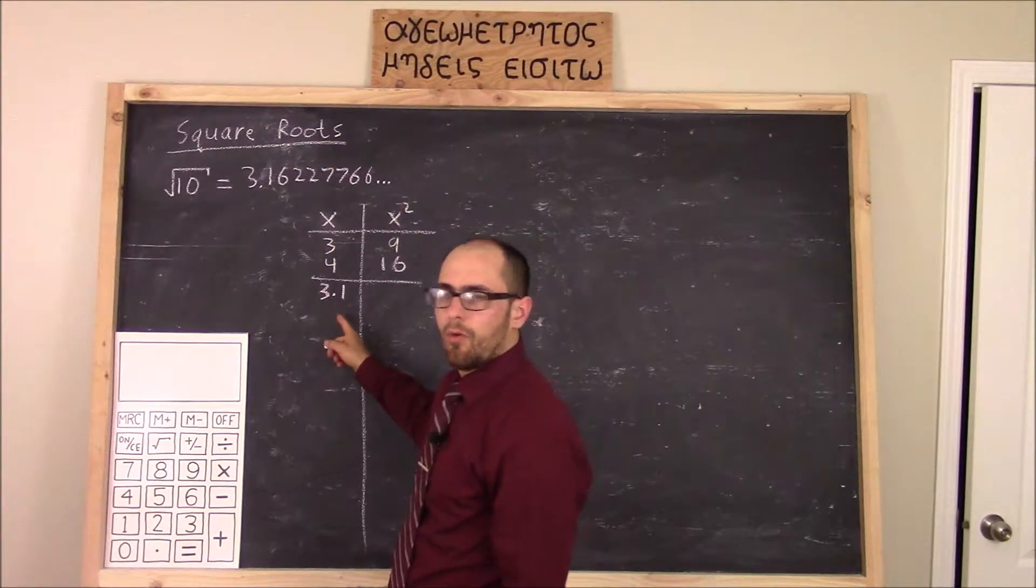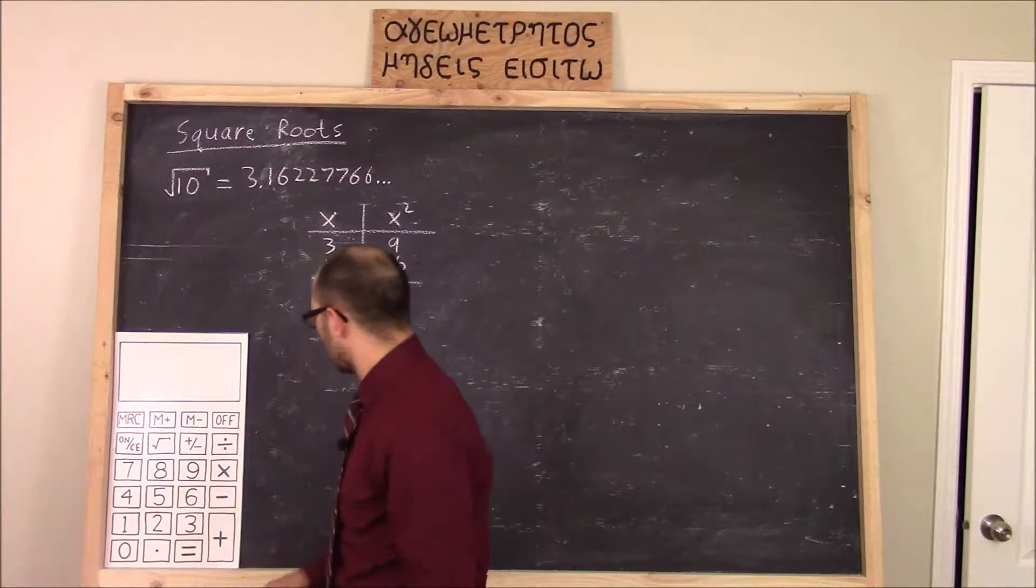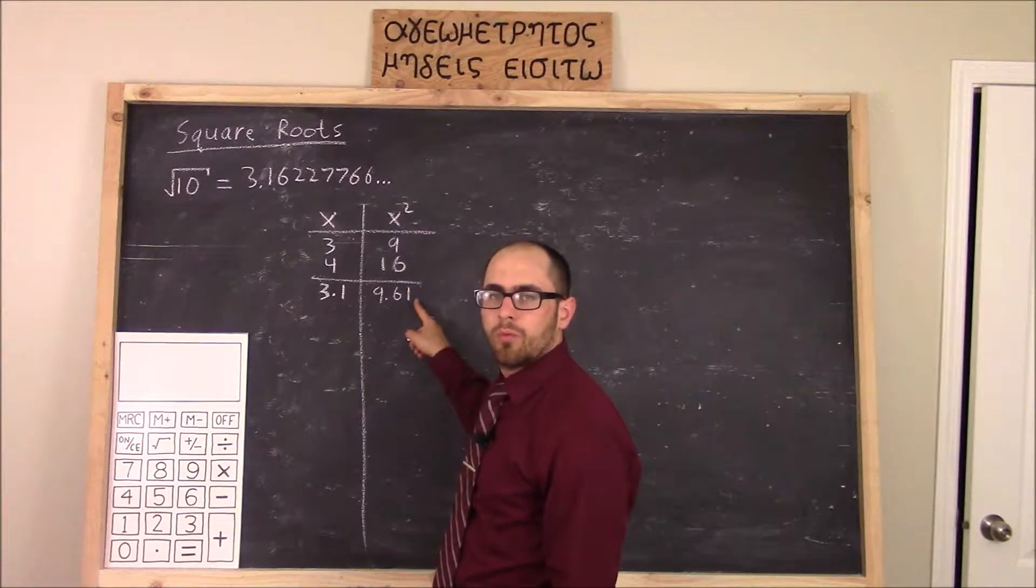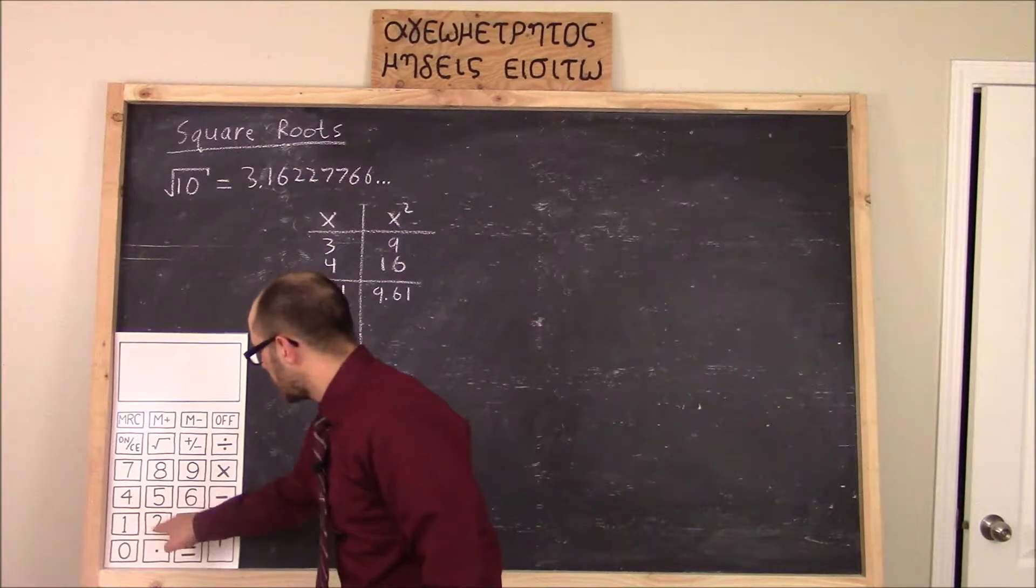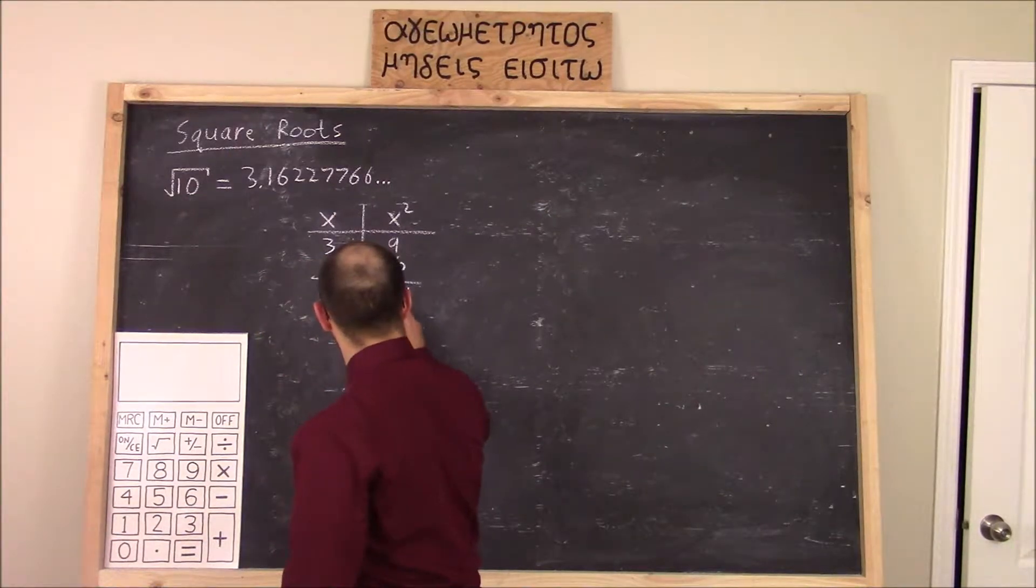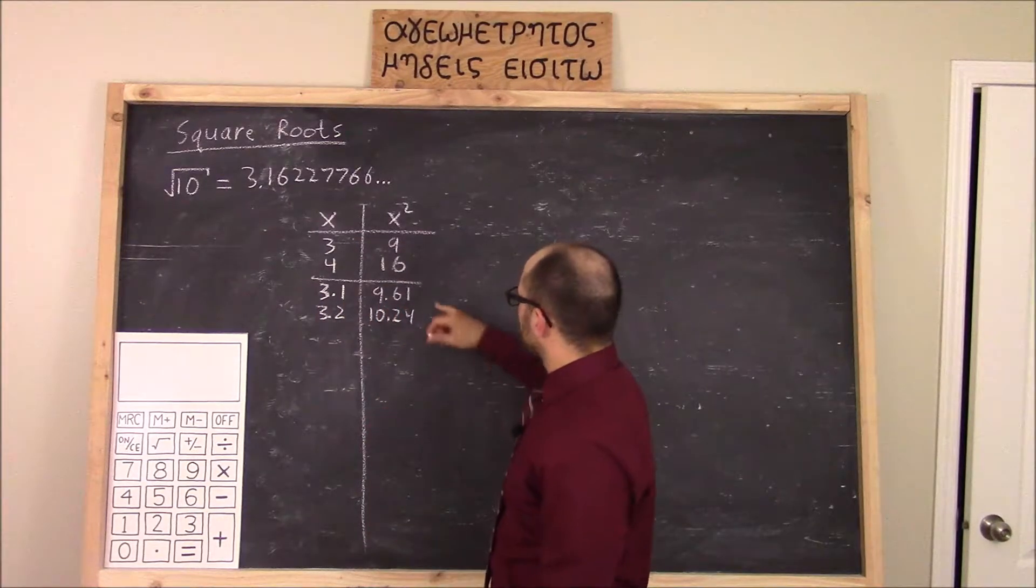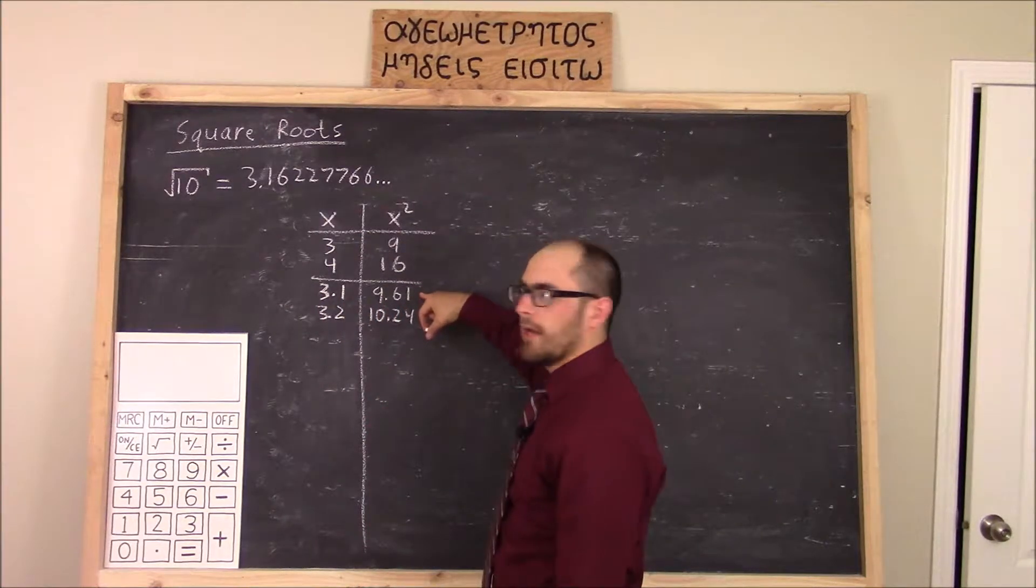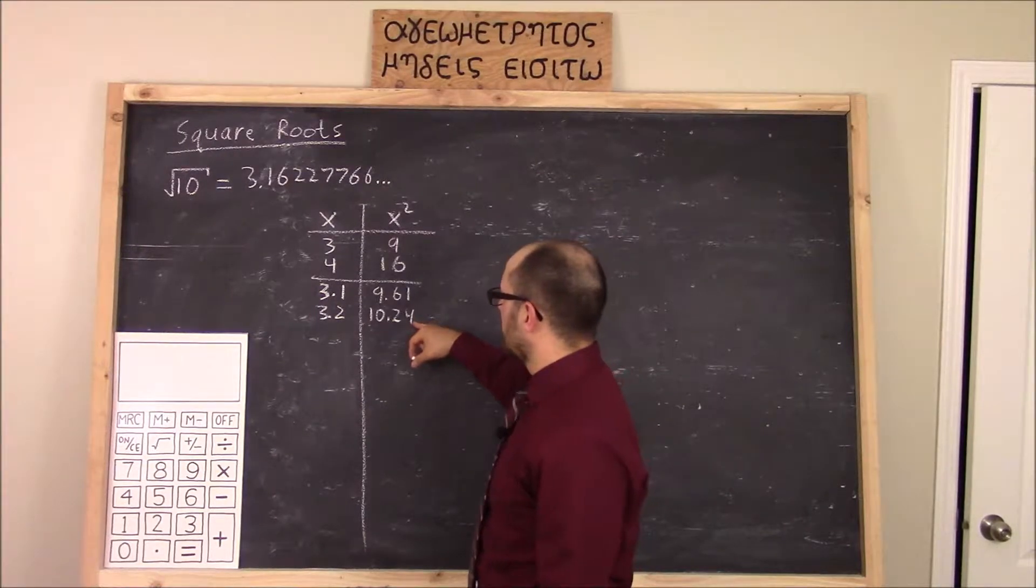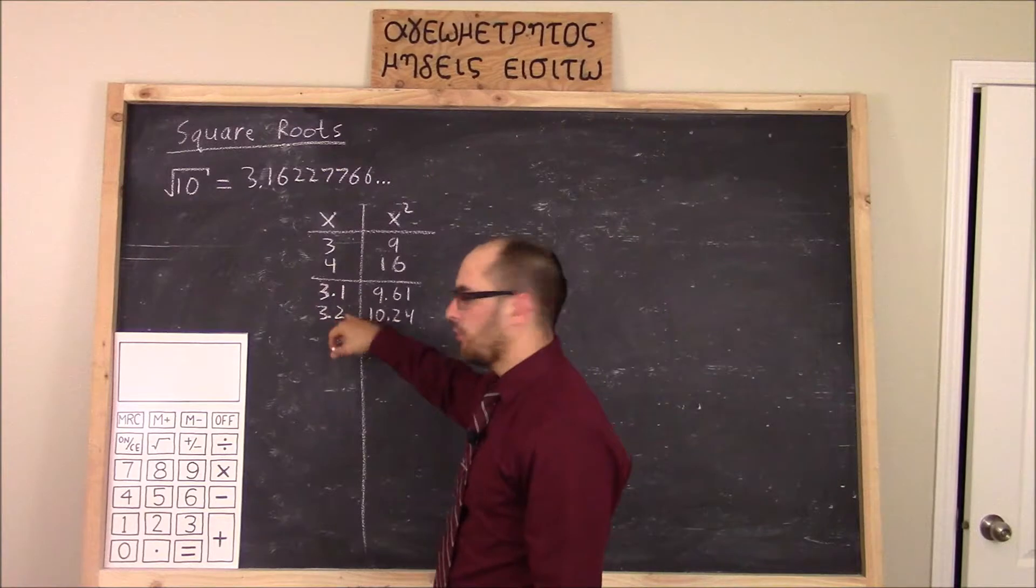Let's try 3.1. 3.1 times 3.1 equals 9.61. And 3.2 times 3.2 is equal to 10.24. Again, we see that 10 is somewhere between 9.61 and 10.24. So x must be somewhere between 3.1 and 3.2.